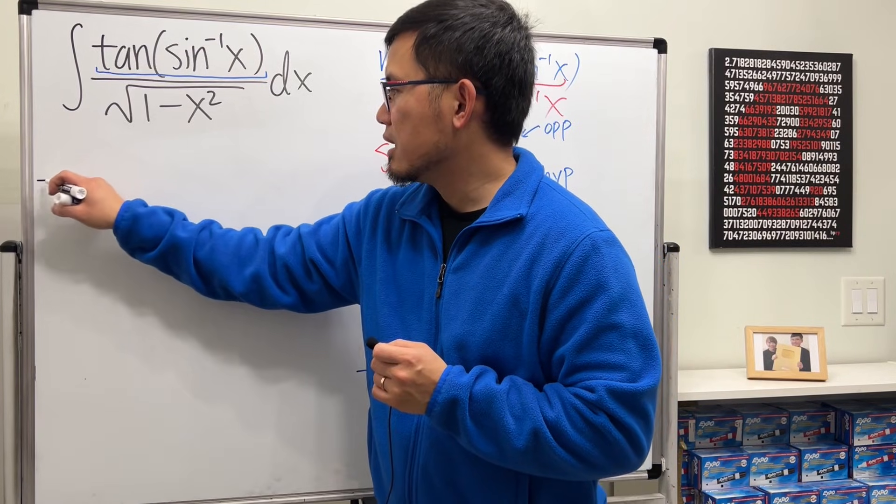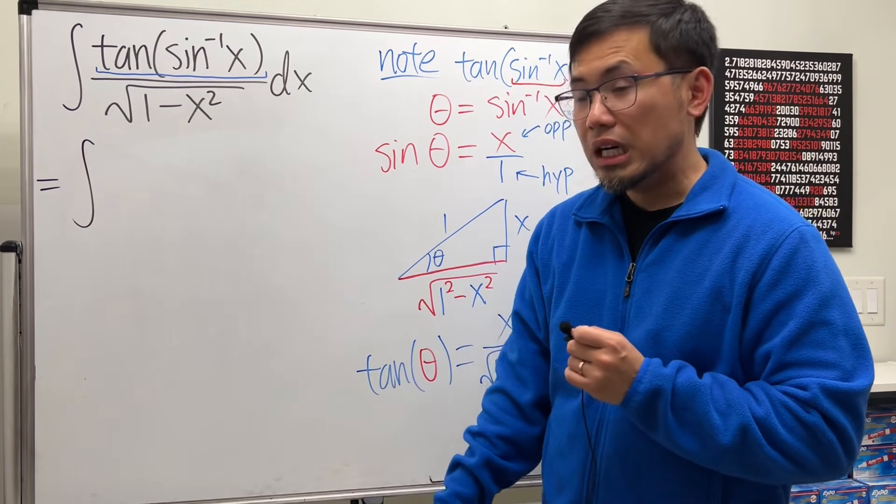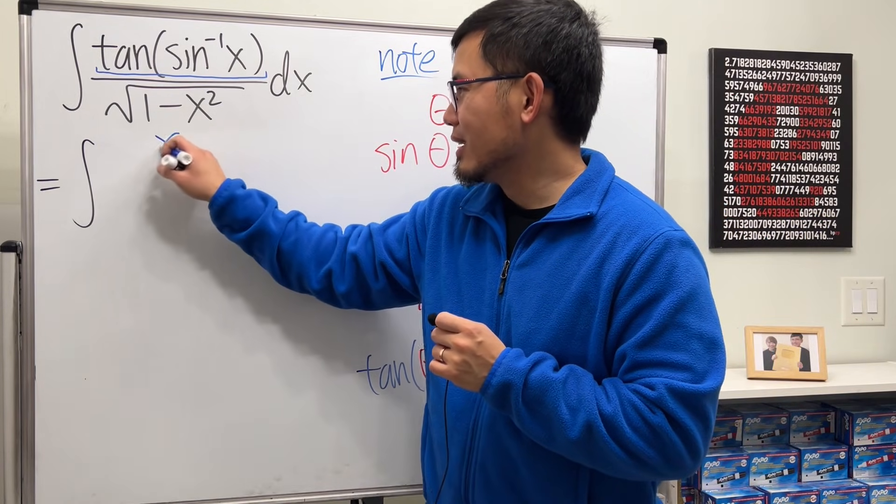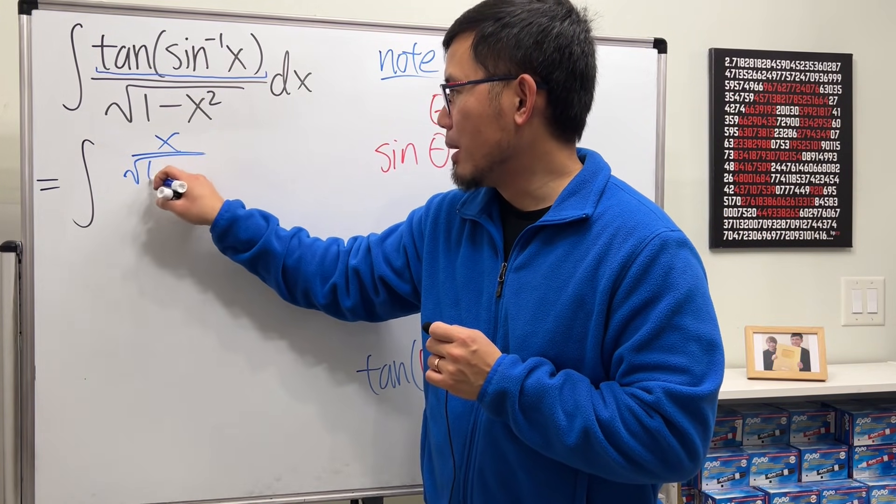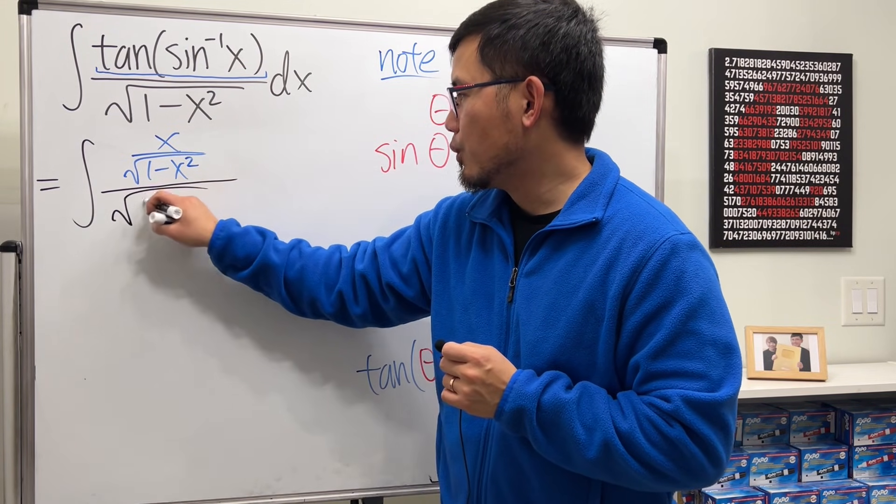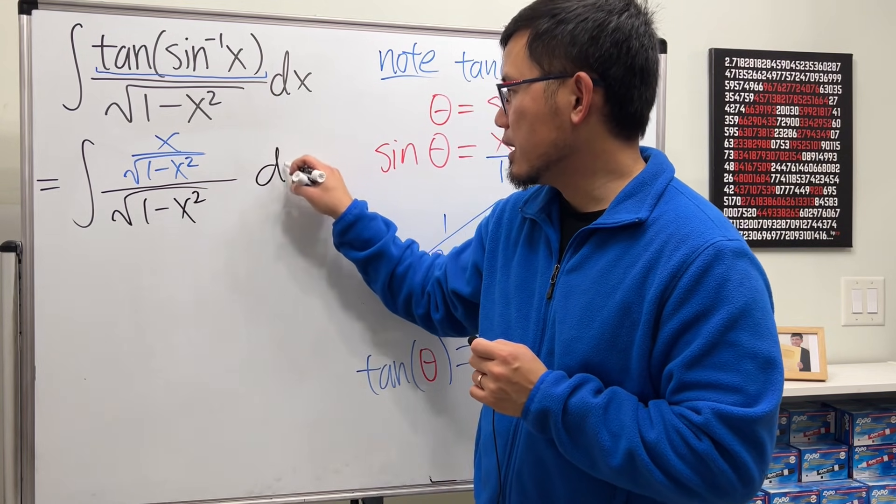This is just the integral of that on the top, so x over square root of 1 minus x squared, and then over that square root of 1 minus x squared dx.